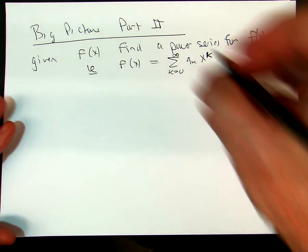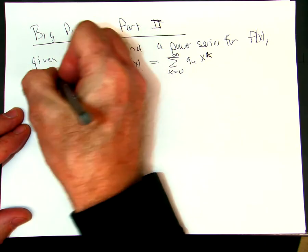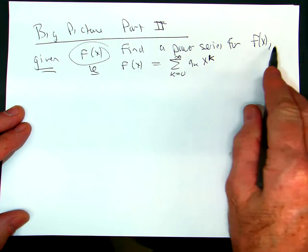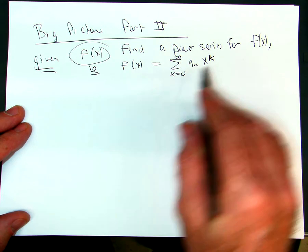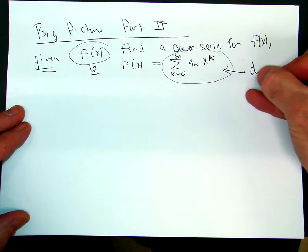Here's the second big picture video, and what I'm doing is, here's what you're going to do. You're going to be given some f of x, and you're going to find a power series for f of x. In other words, you need to find this. So you might need to derive that.